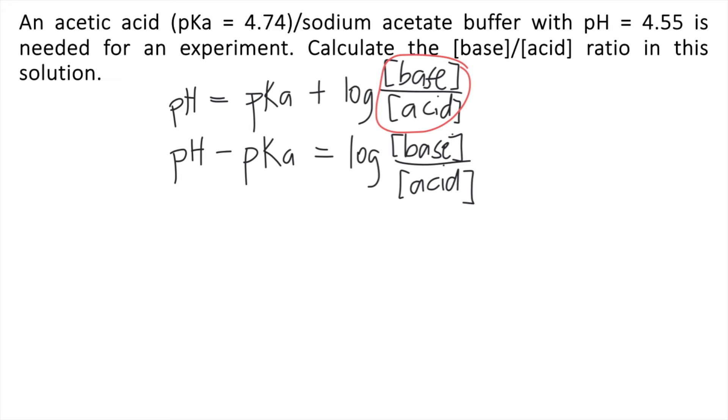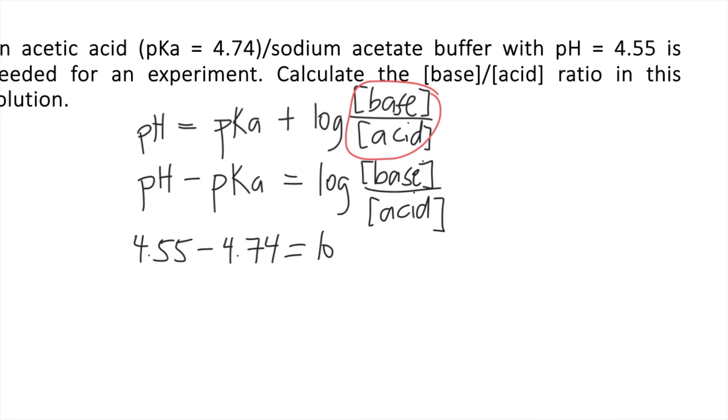Then you substitute the values. The given pH is 4.55 minus the given pKa of 4.74. That equals log of the concentration of base over concentration of acid.